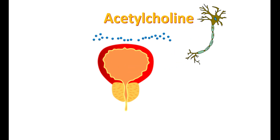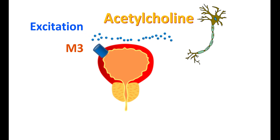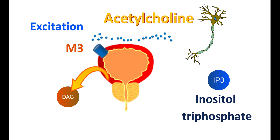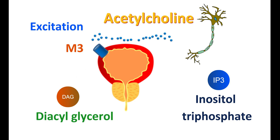The bladder expresses muscarinic receptors of type 3 (M3). These M3 receptors can cause excitation in the target — the bladder — when activated. Normally, acetylcholine acts on these receptors, leading to their activation. This brings release of two mediators: IP3 (inositol triphosphate) and DAG (diacylglycerol). Both mediators increase calcium levels within the muscle, resulting in contraction of the bladder.